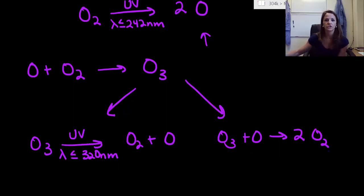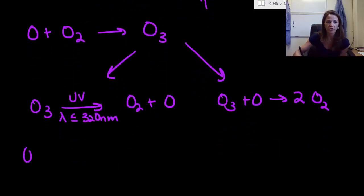If you didn't follow that, here's the shorthand. We start with oxygen. It decomposes to create monatomic oxygen. Monatomic oxygen can interact with diatomic oxygen to create ozone.